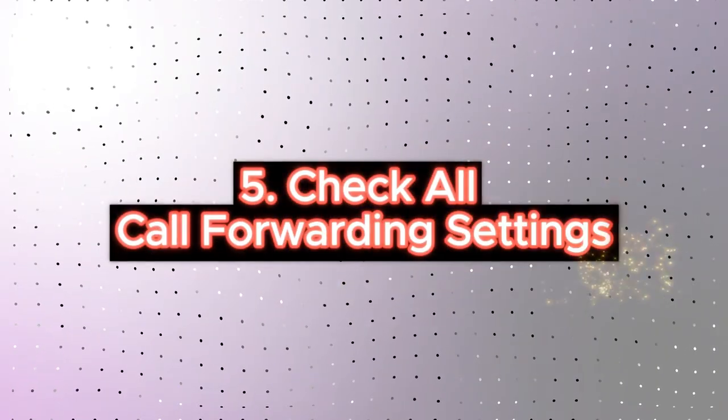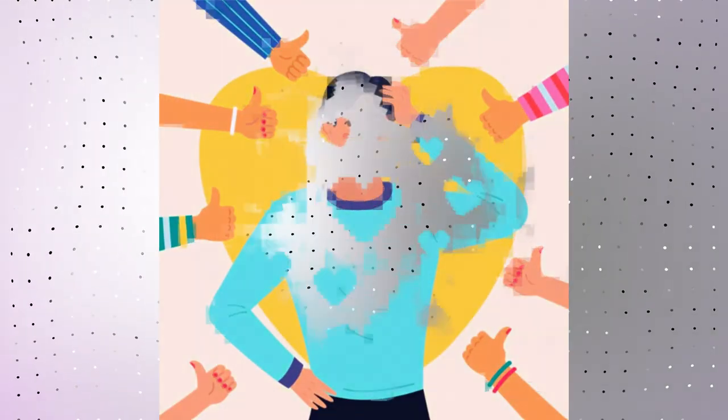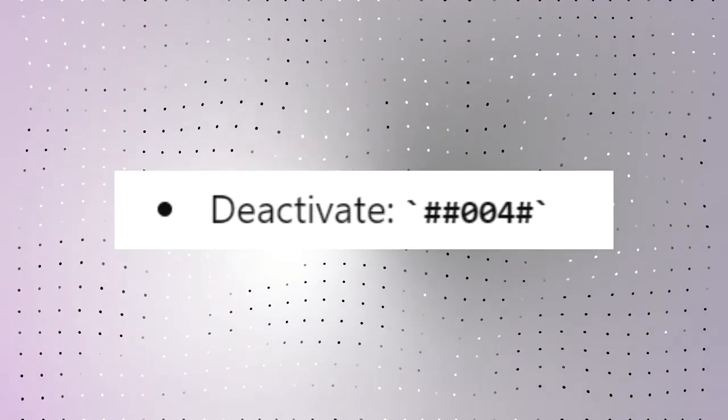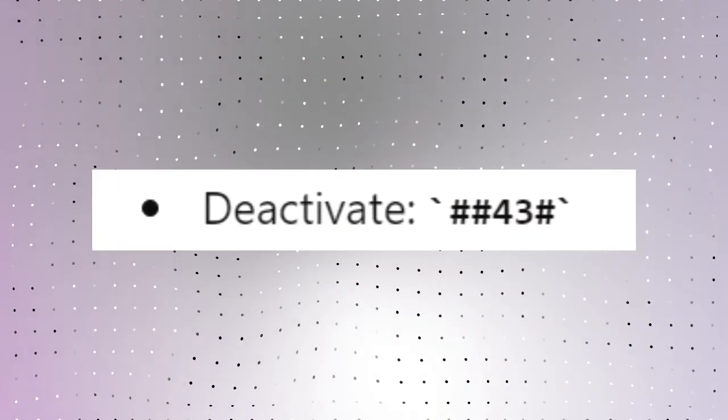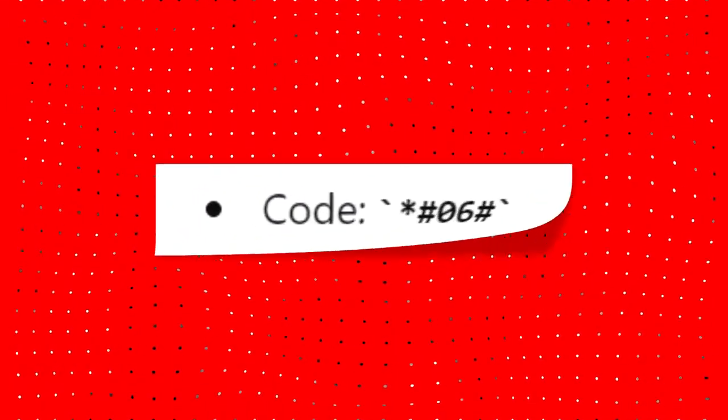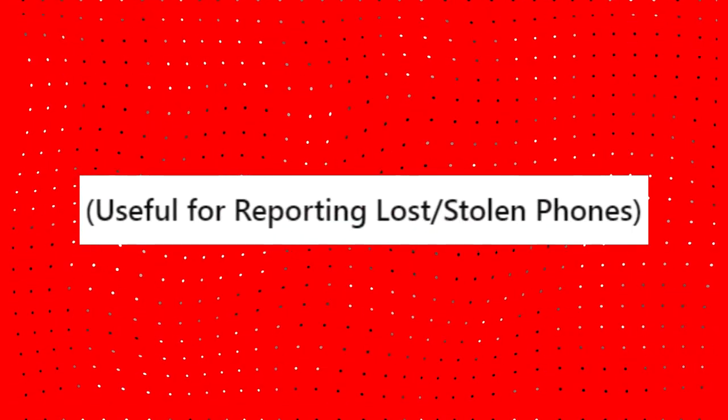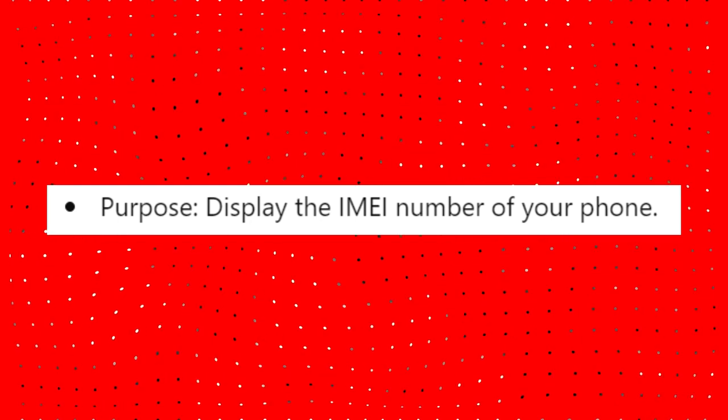To check your overall call forwarding settings, press *#004# and to deactivate it press ##004#. To check if call waiting is enabled, press *#43# and to deactivate it press ##43#. To check your IMEI number, press *#06# — this is very useful for reporting lost or stolen phones and will display the IMEI number of your phone.